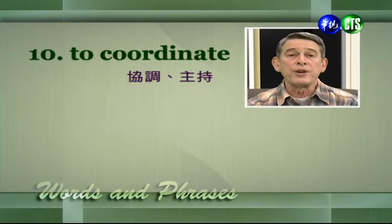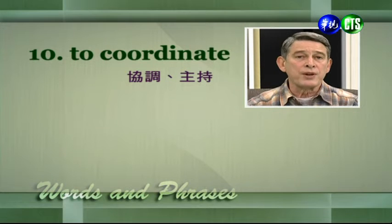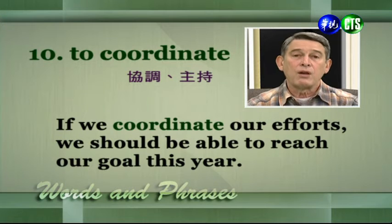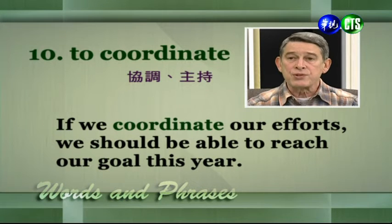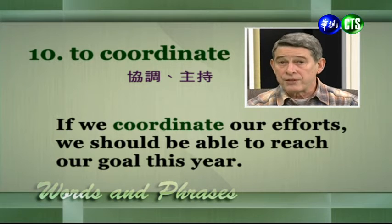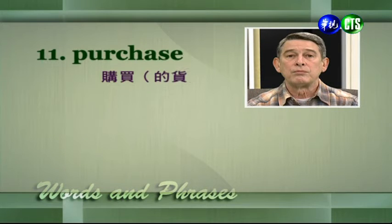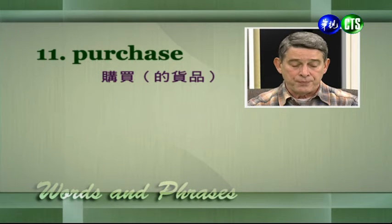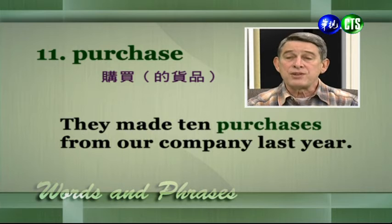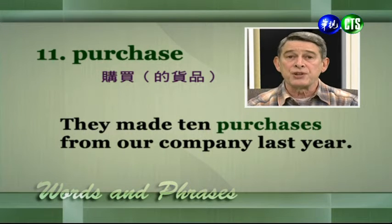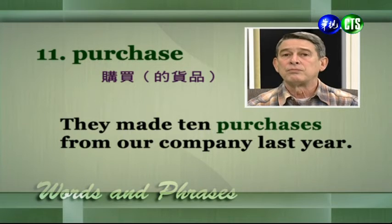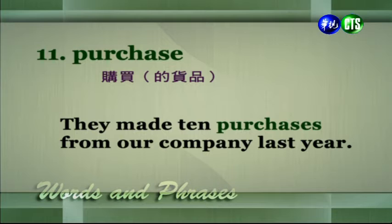To coordinate — 協調、主持。If we coordinate our efforts, we should be able to reach our goal this year. 如果我們同心協力，今年應該能夠達成目標。Purchase — 購買，也可以指購買的物品。They made 10 purchases from our company last year. 他們去年和我們公司訂過十次貨。